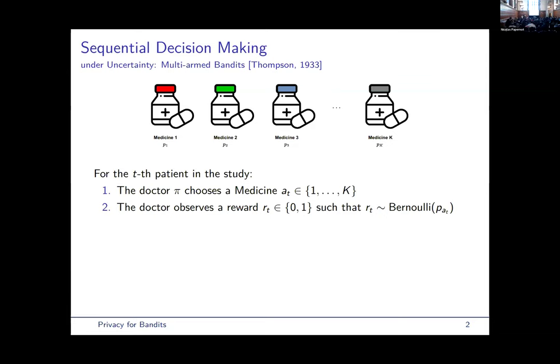At each step of this sequential interaction, a new patient arrives, and the doctor recommends one of the K candidate medicines. That's what we also call arms or actions. And then the doctor observes a reward,